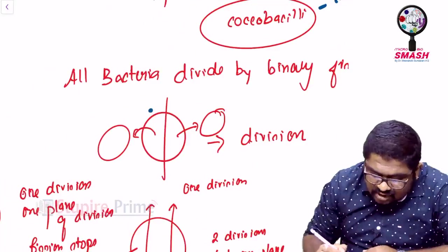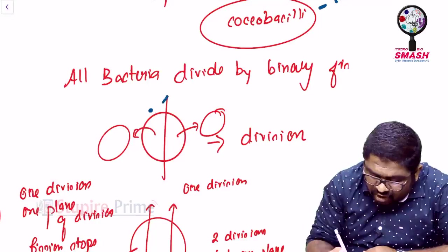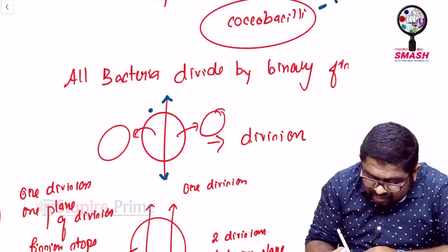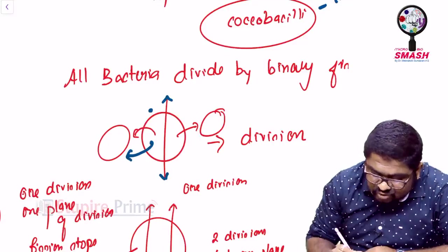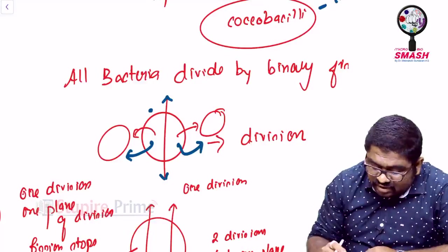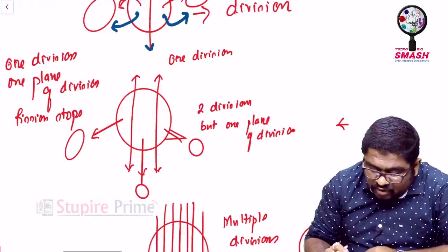Now, look at this. I start with a single coccus. If I go for a plane of division, that is, there is one division. Now, this division can make sure that this particular structure can give rise to - this half can give rise to one sphere. This half can give rise to another sphere. So, one becomes two.